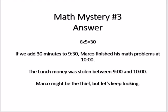Math mystery clue number three answer: six times five equals 30. If we add 30 minutes to 9:30, Marco finished his math problems at 10:00 a.m. The lunch money was stolen between 9 and 10 a.m. Marco might be the thief, but let's keep looking and solve the last clue.